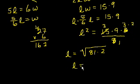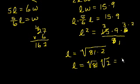So L equals the square root of - we could rewrite the 6 as 3 times 2. So then we get 3 times 9 times 3, that's 9 times 9, that's 81 times 2. So L equals 9 times the square root of 2, which is choice A.